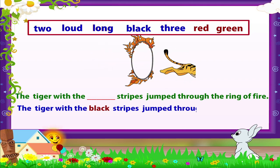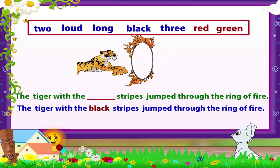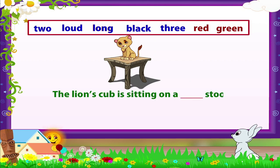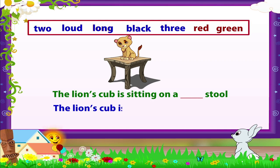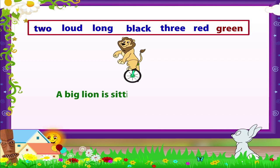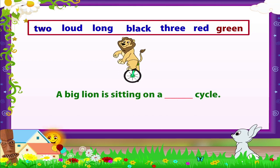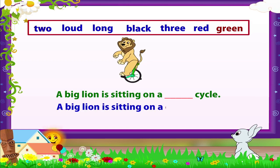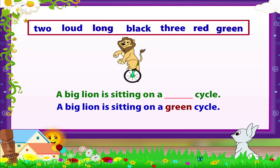The tiger with the black stripes jumped through the ring of fire. The lion's cub is sitting on a red stool. A big lion is sitting on a green cycle.